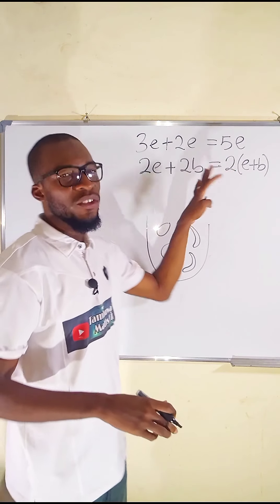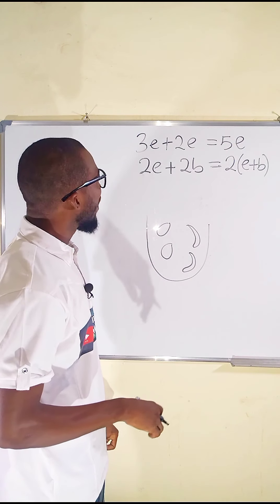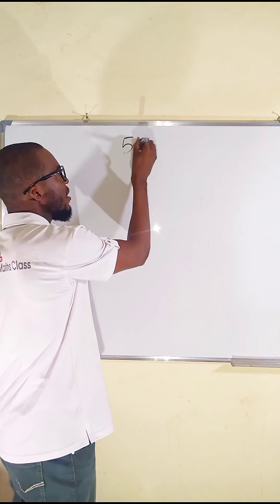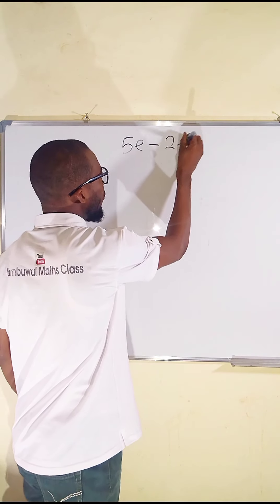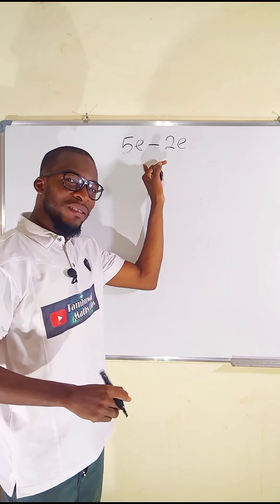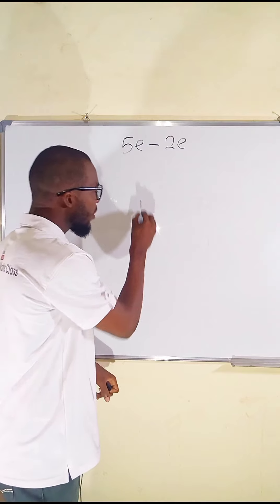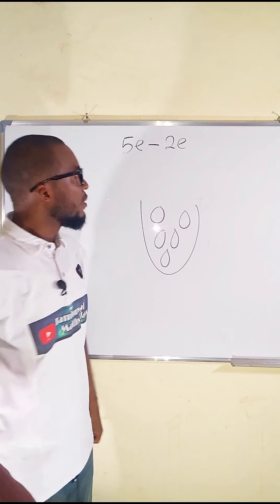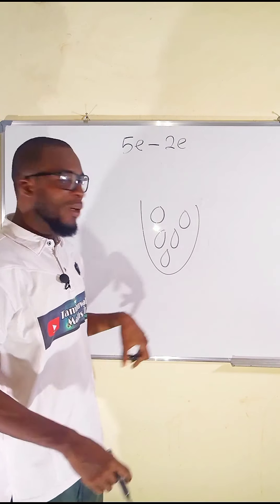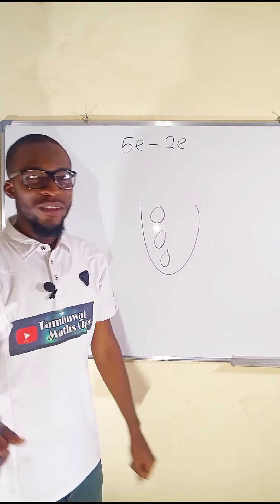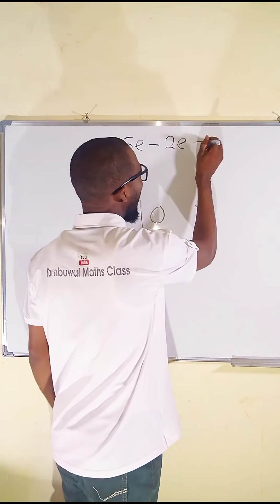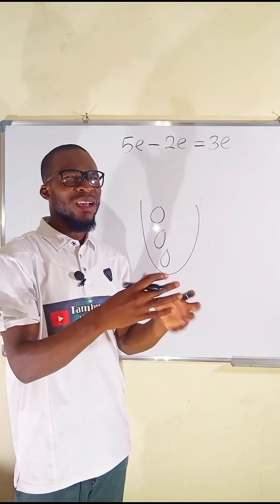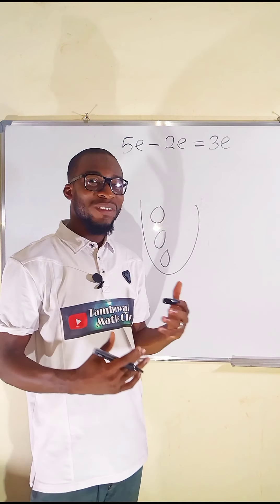The only thing they have in common is the number two. That's about addition. Now let's move on to subtraction. Suppose I have 5e and I want to take away 2e — five eggs take away two eggs. If I have a basket containing five eggs and I take away two, what is left is just three. Relating variables with something natural will make students understand even better.